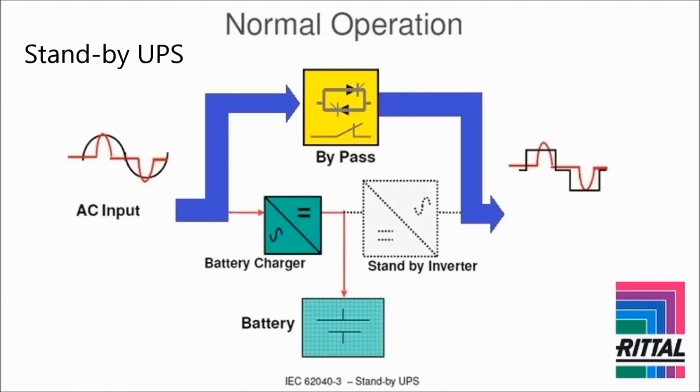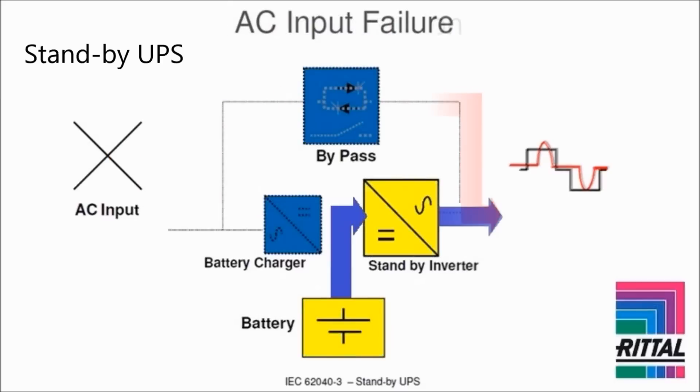The standby or offline UPS has a square wave output, which is often referred to as a modified sine wave output. When utility power is available, it is supplied to the connected equipment through a bypass switch, and the AC input is simply passed through to the output. When the AC input fails, the battery-powered inverter outputs a stepped square wave, forming a crude approximation of a sine wave output.